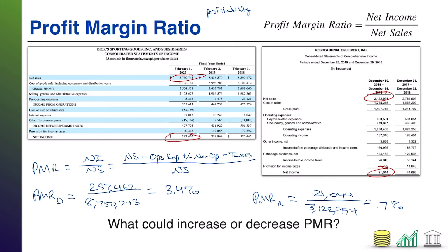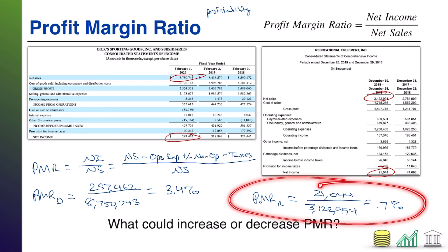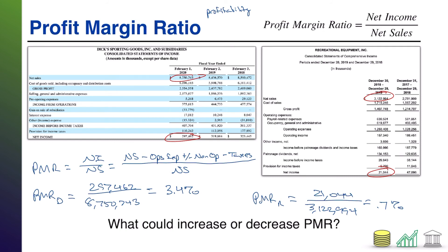Now what does this tell us about these companies? Just the raw numbers — 3.4% and 0.7% — tell us that Dick's, at the end of the day after all other aspects of their business, still keeps 3.4% of their revenue. REI, at the end of the day, only keeps 0.7% of their revenue. So no matter how well either company is doing with selling and marking up products and collecting a good gross profit, the rest of the business could be eating all of those profits away. In the case of REI, that definitely looks like the case — whether it's coming from operating expenses, non-operating components, or taxes, something lower on the income statement is eating up their profit.